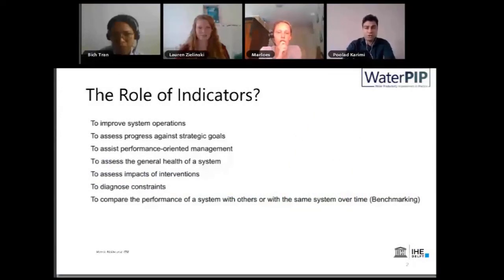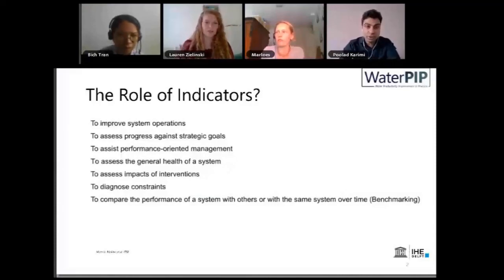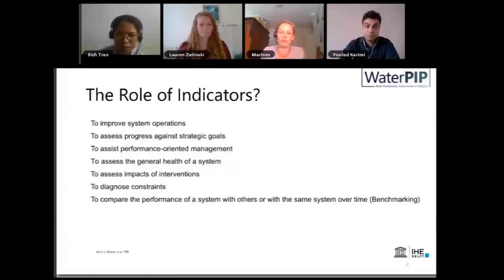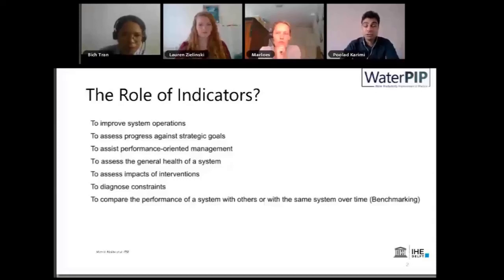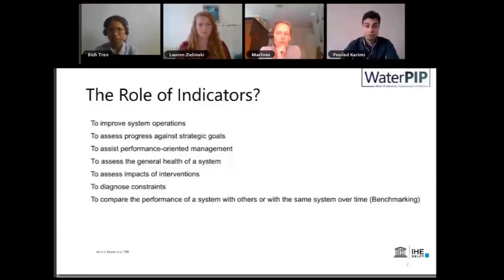Why do we use these indicators? It's generally about when we have an irrigation system, we would like to improve system operations. We would like to know how far we are from our strategic goals — at the beginning we have some goals, but then throughout the years we have to see whether we've achieved those goals or are drifting away. We could also use this to assist management, as a day-to-day operation of the irrigation scheme.